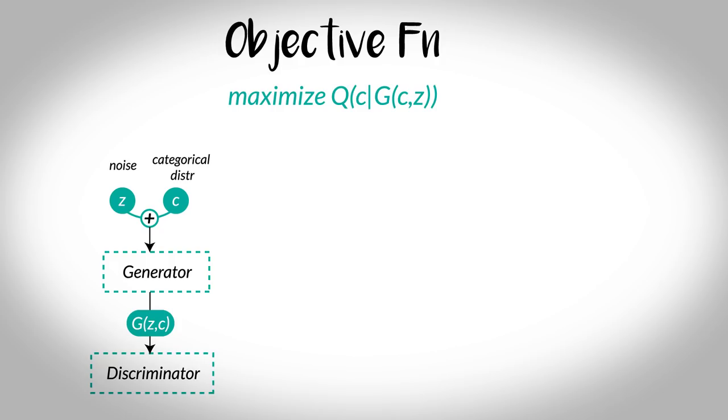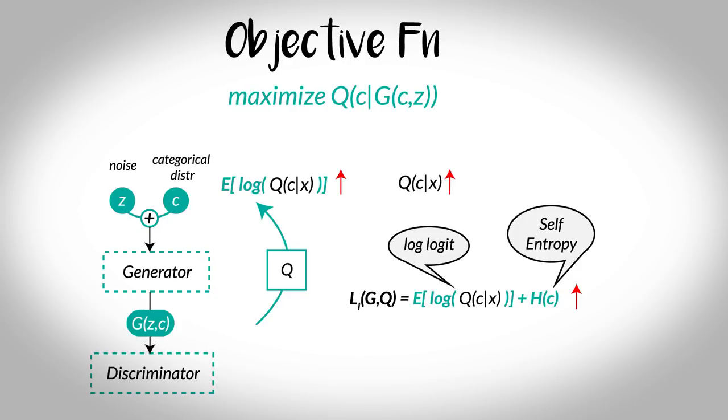For achieving this disentanglement, we introduce an auxiliary neural network Q which maps back the generated images to the latent vectors and maximizes this mutual information between the distributions of C given X and the original C. This is done by minimizing the entropy term. The representation becomes absolutely disentangled if this log-logit term becomes zero and Li becomes equal to Hz. I mean, this is a very beautiful application of information theory in GANs.